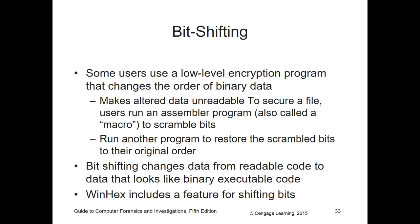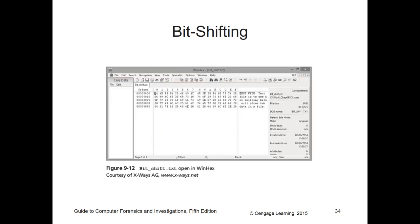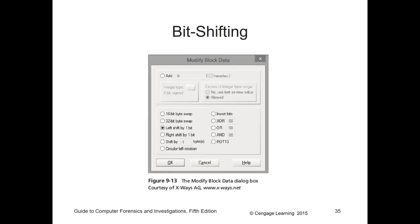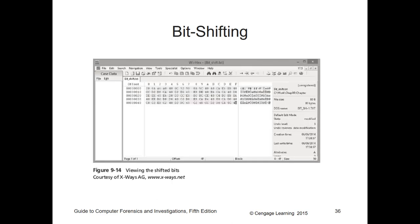Bit shifting is also very common. Some users use a low-level encryption program that changes the order of binary bits, making altered data unreadable. This is done to secure a file. Users will run an assembly program to scramble the bits, and run another program to restore the scrambled bits. Bit shifting changes data from readable code to non-readable code. Winhex includes a feature for bit shifting. Here's an example of bit shifting in Winhex — we can say how we're doing our shifting, Winhex will do the shifting for us, and then we get to read the data.